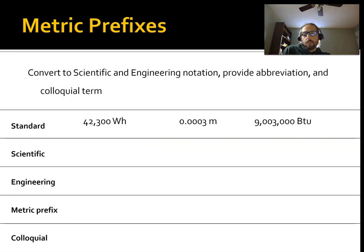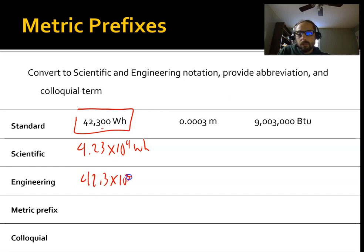So let's just do a quick example or two. So we have this number, 42,300 watts. So the scientific notation is going to be 4.23 times 10 to the 4th watt hours. Excuse me, watt hours. So we get 10 to the 4th. We subtract 1, 42.3 times 10 to the 3rd watt hours. 10 to the 3rd, if you look up on your chart, is kilo. So it's 42.3 kilo, lowercase k, very important, watt hours. And our colloquial will be 42.3 thousand watt hours.